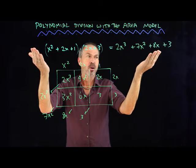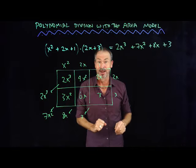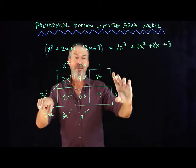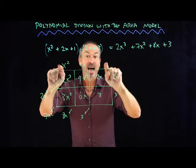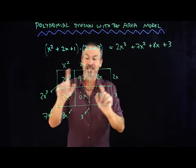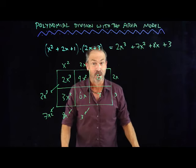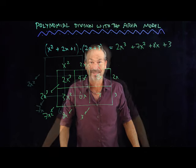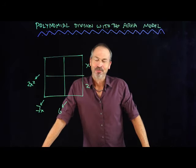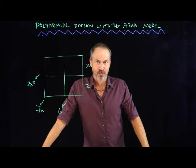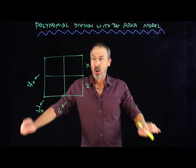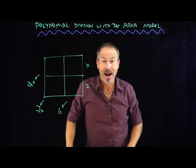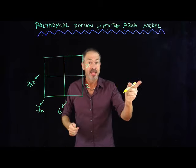We can do polynomial multiplication with the area model beautifully. But what's really fun is to go backwards. Suppose I give you the answer first — I give you one of the factors and ask you, what was the other factor? What multiplied by this to give the answer you want? And people call doing multiplication backwards division. Let's do some division examples.